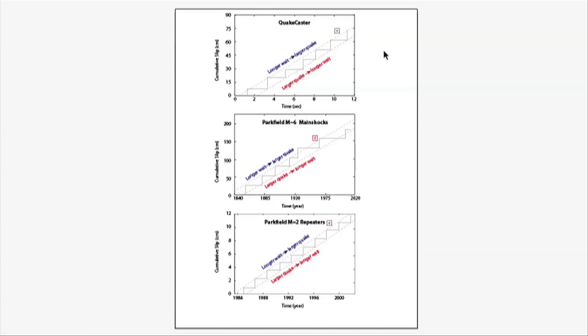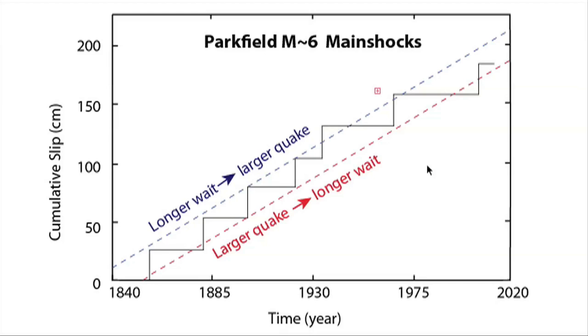Here we have stair step diagrams of QuakeCaster earthquakes and earthquakes that occur along the San Andreas Fault. And you can see that the QuakeCaster data is similar to the data collected on the Parkfield section of the fault. This chart shows magnitude 6 earthquakes that occur roughly every 20 to 30 years along the Parkfield section of the San Andreas, and the dates shown are from the time of the gold rush to present day. And we can see that this data does not fit perfectly the slip or time predictable hypotheses. It doesn't quite match up.